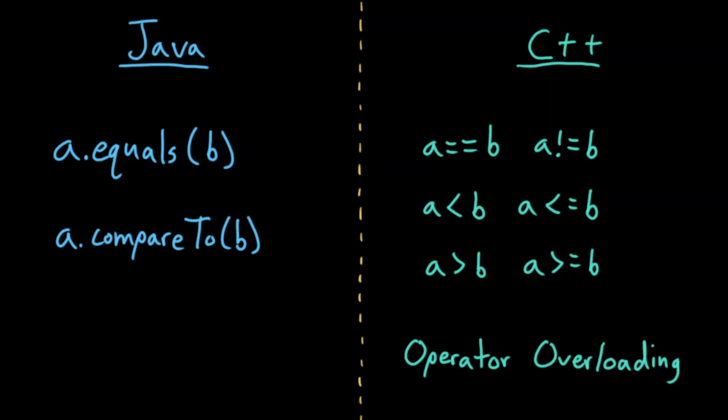In Java, if I want to compare two non-primitive objects, I cannot use the relational operators. Instead, I have to use the equals and compare to methods. Otherwise, Java would just compare memory addresses of the variables, which is not what I want.